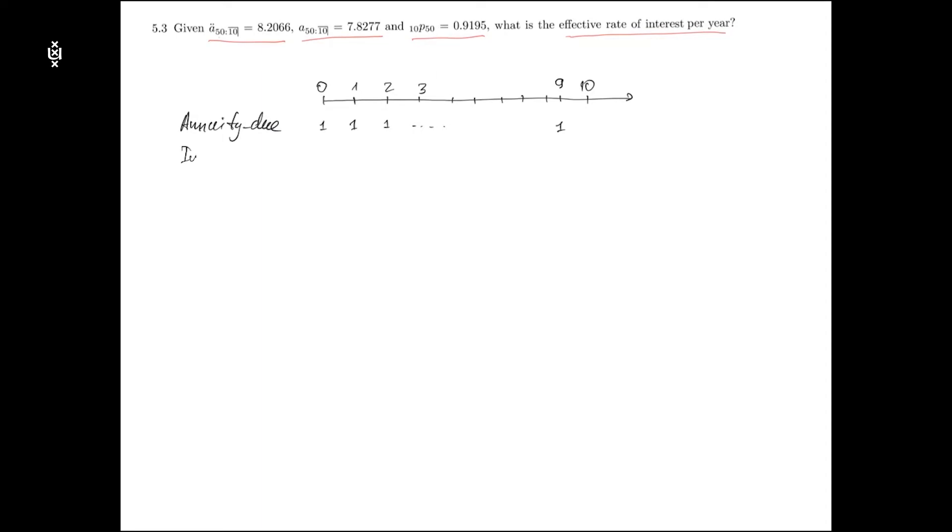Under the immediate annuity the payments are made in arrear. So there are also 10 payments but the first one is made at time period one and the last one is made at time period 10 conditional that the life is alive at the time of these payments.